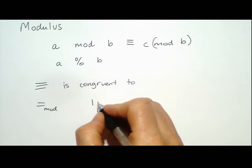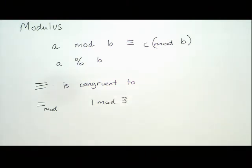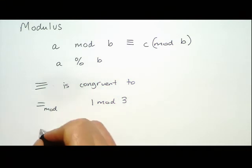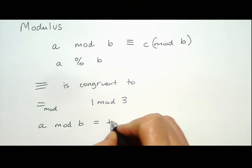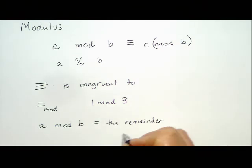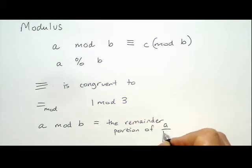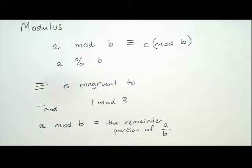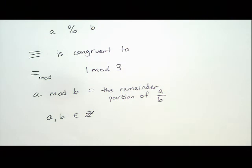So what does that actually mean? Modulus means you divide the first number by the second number. A mod B is A divided by B, and it gives the remainder of that — the remainder portion of A over B. We care about the remainder as a whole number, not a fraction. A and B have to be integers, and A mod B is also in the integers.